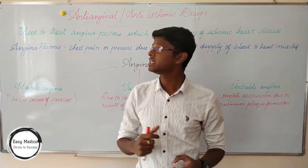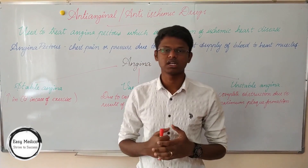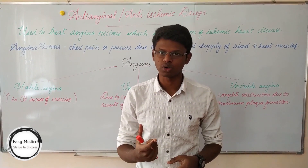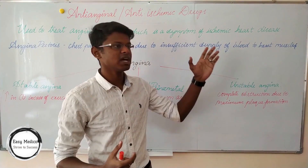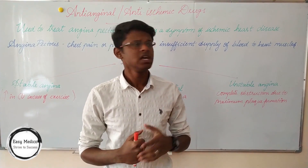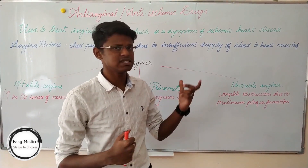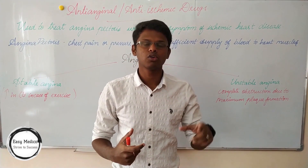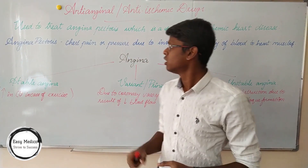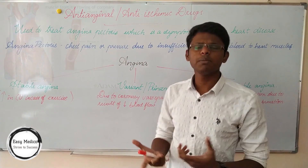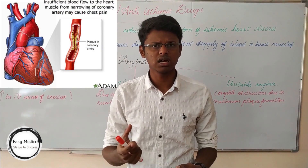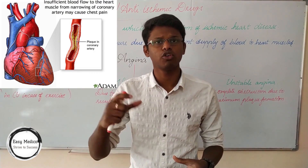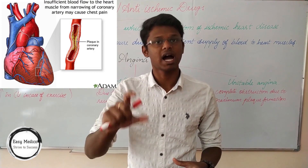First of all, what are these anti-anginal drugs used for? These are used to treat angina pectoris, which is a symptom of ischemic heart disease. This ischemic heart disease can also be known as coronary heart disease or coronary artery disease. Angina pectoris is a chest pain which occurs during insufficient pumping of blood to the heart muscles.